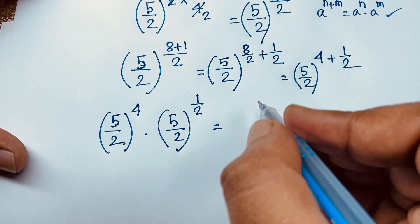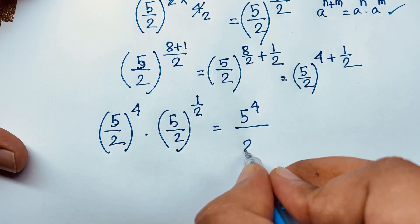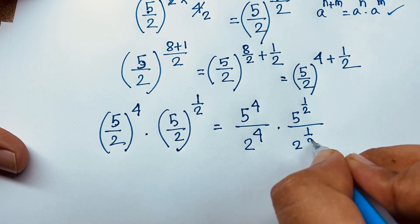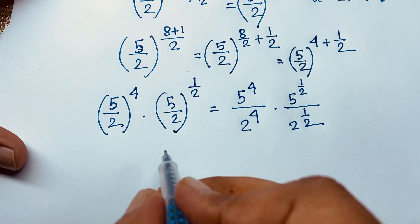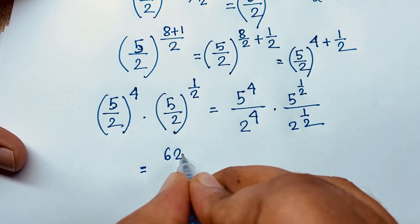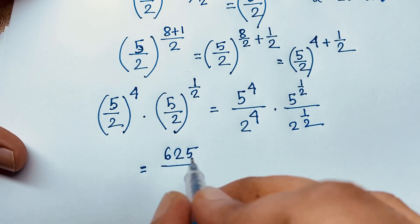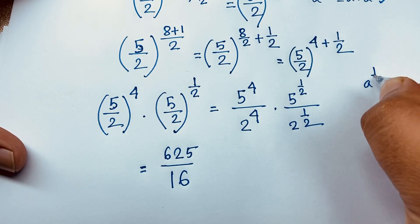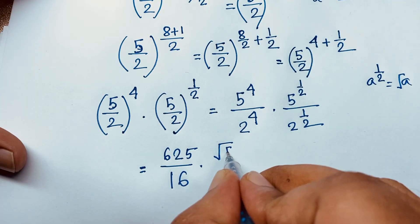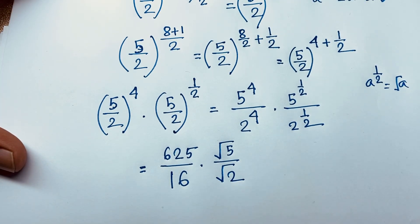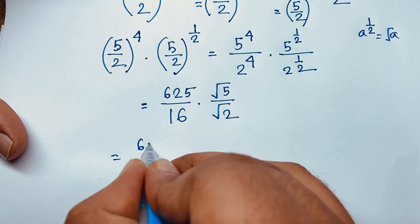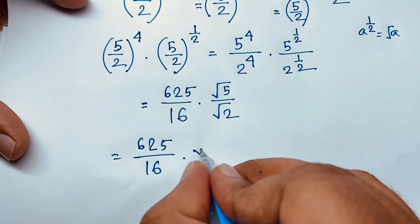Expanding further, this gives us 5 to the power 4 over 2 to the power 4, times 5 to the power half over 2 to the power half. Now 5 to the power 4 is 25 times 25 which equals 625, and 2 to the power 4 is 4 times 4 which equals 16. Since a to the power half is the square root of a, we have square root of 5 over square root of 2.